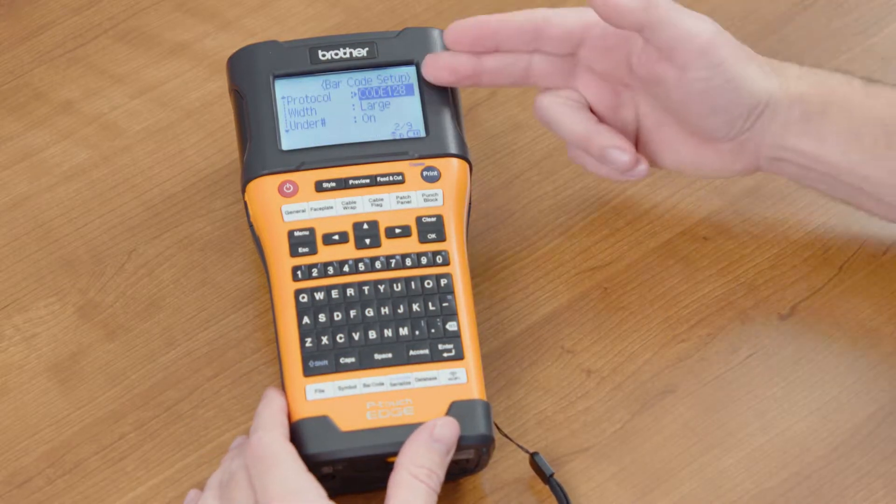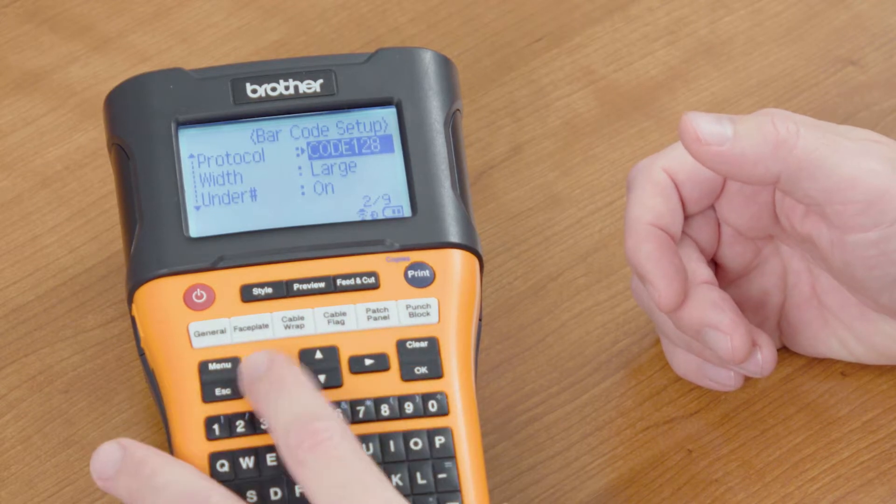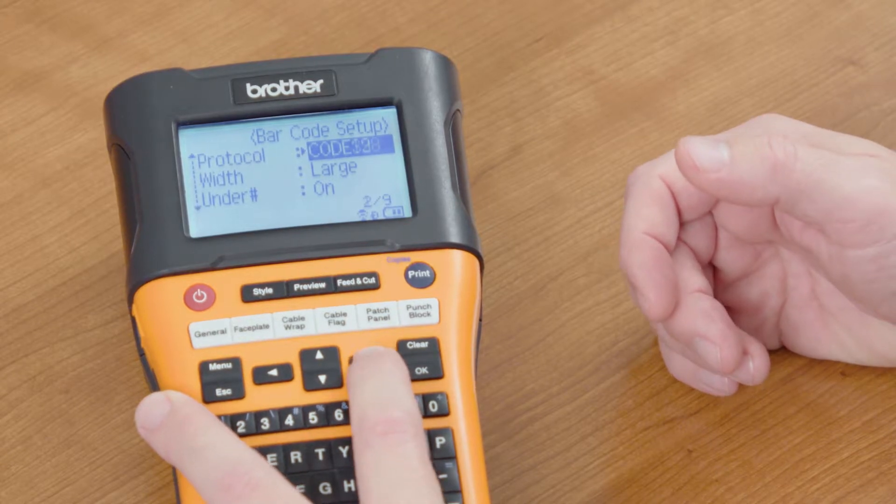Once you've selected that symbol, then answer the following questions. What kind of barcode do you want? Using the left and right arrow keys, you can select what type of barcode you want. You can see that many of them are already loaded in the machine.